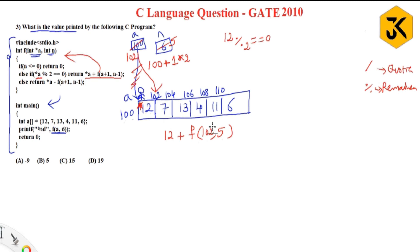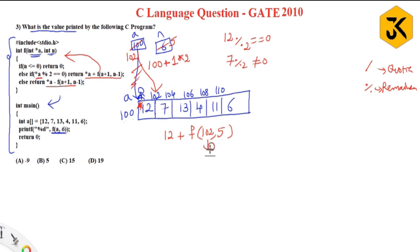If you know this concept you can directly solve the question, otherwise follow the video. f(102, 5): is n <= 0? No. Else case: star a — a is 102, star a is 7. Is 7 % 2 == 0? No. So it goes to the else case: return star a minus f(a+1, n-1), that is 7 minus f(104, 4).